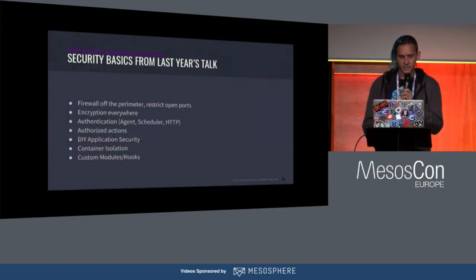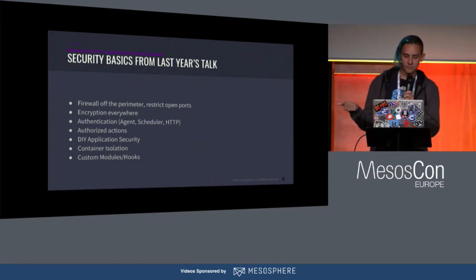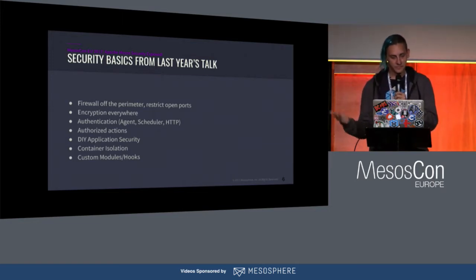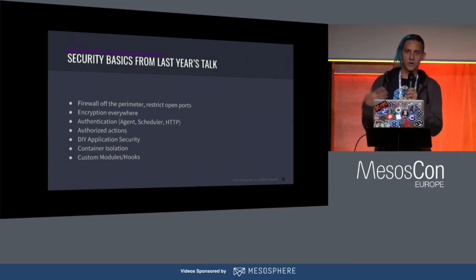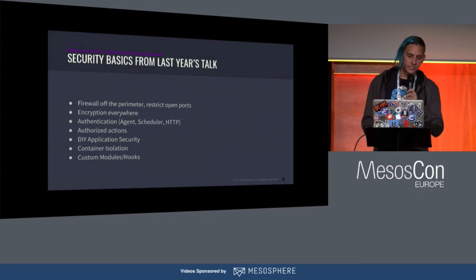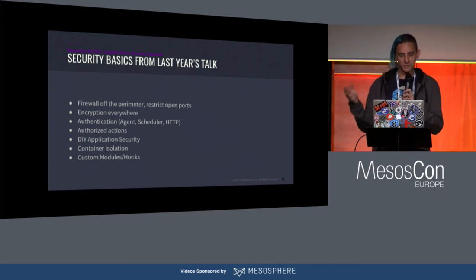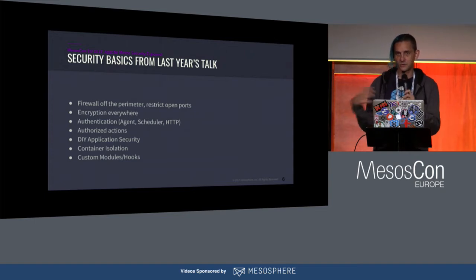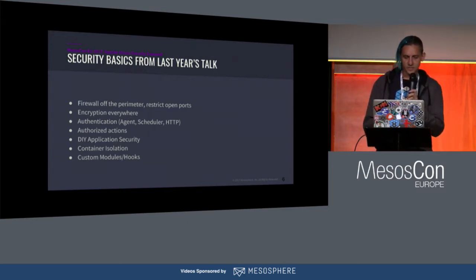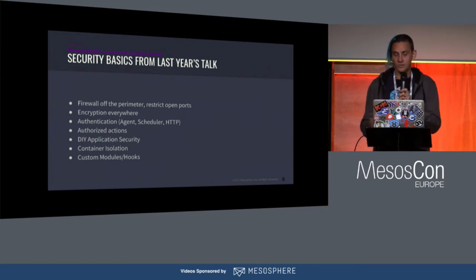Getting into some of the security basics: we summarized last year's talk with the basic idea that you need to firewall off the perimeter, encrypt everything you can, and add authentication to all the Mesos APIs as well as any others. You need to authorize any action that can perform modifications to the system or retrieve sensitive information. You need to secure your own applications running on top of Mesos, and isolate all containers so that co-located workloads don't impact each other's performance or visibility. I'll also mention custom modules and hooks you can use to extend Apache Mesos with your own security implementations.